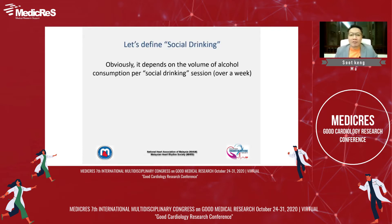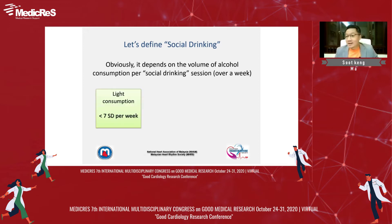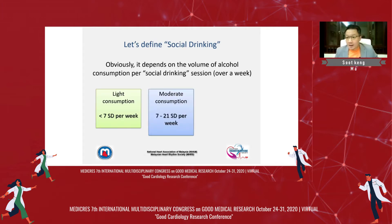Let's take a step back and define what is social drinking. Obviously, it depends on the volume of alcohol consumption per session. Typically, we define it over the course of a week. What is light consumption? Light consumption is less than seven standard drinks per week. Moderate consumption, on the other hand, is seven to 21 standard drinks per week. And obviously, heavy consumption would be above 21 standard drinks per week.